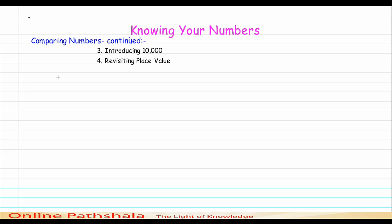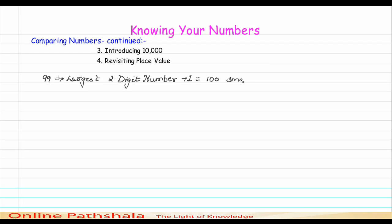If I ask you what is 99, you will say this is 99. But there is a peculiar thing about this number — 99 is actually the largest two-digit number. And if I add one to it, I get 100, which is the smallest three-digit number.